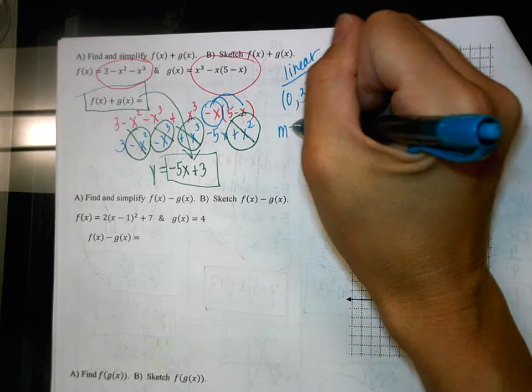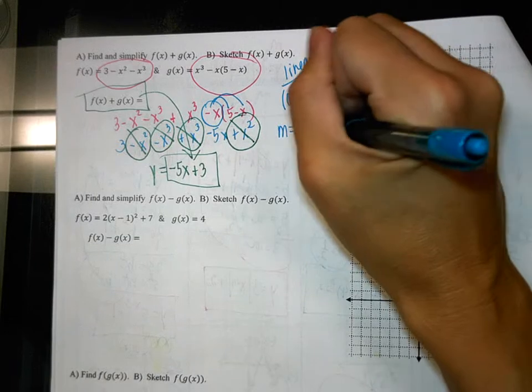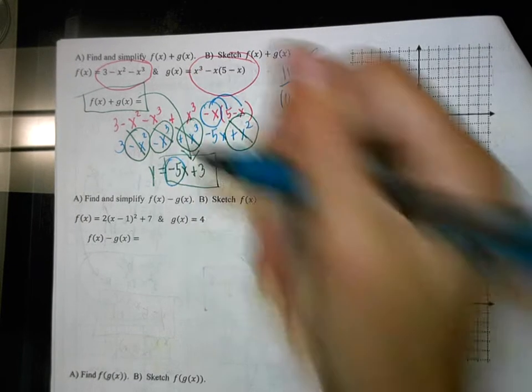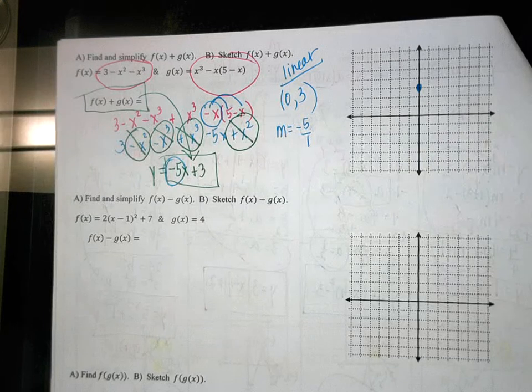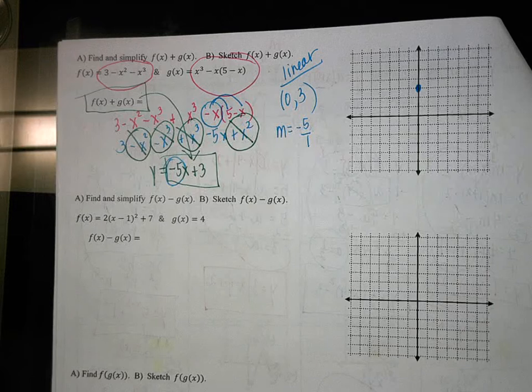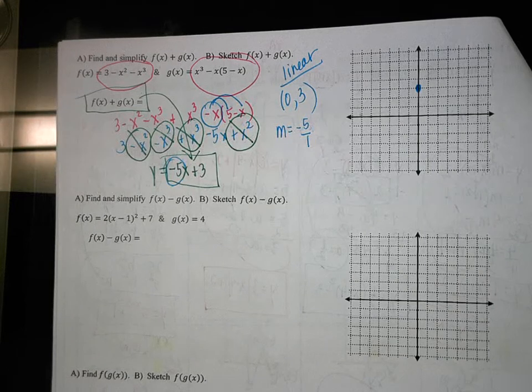So what is my slope here? Negative 5 over 1. Good, because if you have a whole number there in front, remember slope is always rise over run, so you always need two values. And so if you just have a whole number of negative 5, you make it a fraction by putting it over 1.